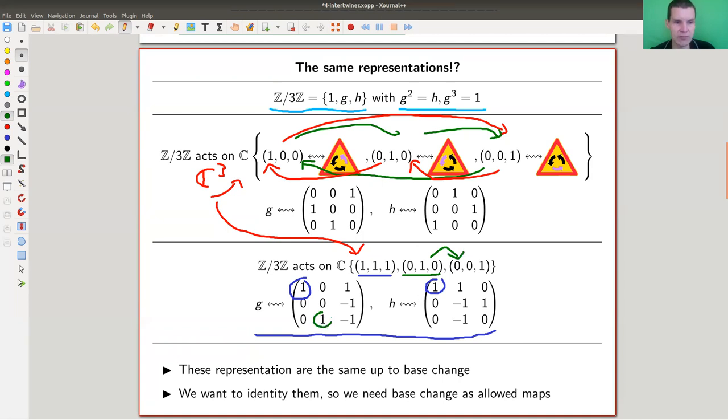The h action is much more complicated, because it wants to send this one to, well, the first one, which is now gone. And you can check that actually it should be this linear combination. And something similar happens for the last entry, just with reversed, kind of reversed for f and g, I have for g and h. And so it's really the same representation, I just disguised it by doing a base change.